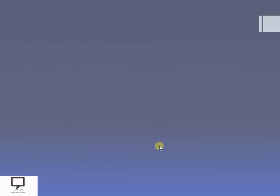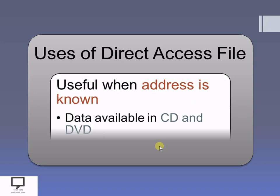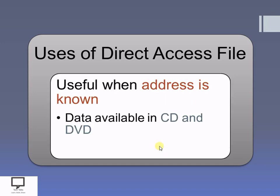Here I am explaining the uses of the direct access file. As I explained previously, the addresses are known and we can access any record directly, so whenever you want to access any particular record, the direct access file is very useful. The best example is the data available in your CD or DVD, where we can play and access any of the data, and where the address is calculated.